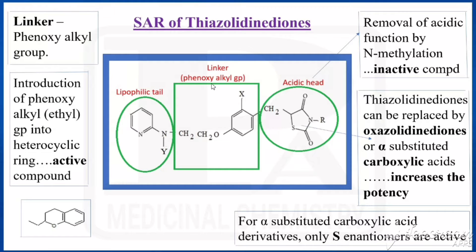Now come to the linker. The linker present here is the phenoxyalkyl linker. Introduction of a heterocyclic ring into the phenoxyalkyl group — between the phenoxy and the alkyl — means we are getting an active compound. That oxygen is converted into a heterocyclic ring, and if we get that structure, the activity would be increased.